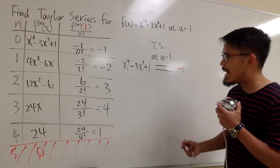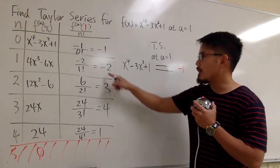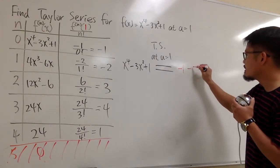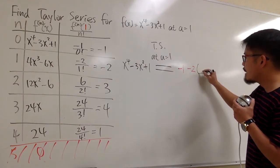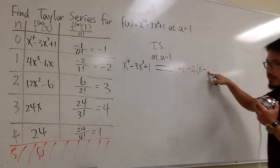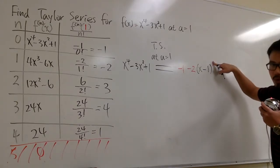And then we are going to add it with the next, this is the coefficient of the next term. We are going to add negative 2 times something. So that will be minus 2, and then we multiply by x minus the a value, because that's the center. x minus 1 to the 1st power right here.